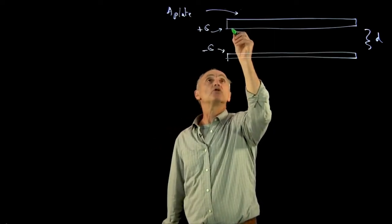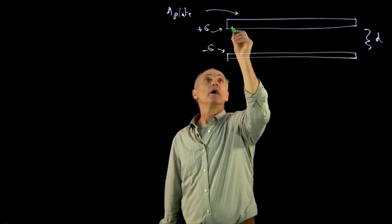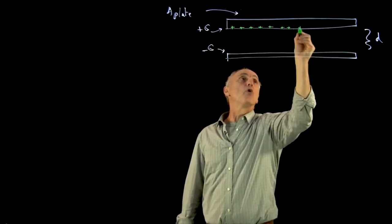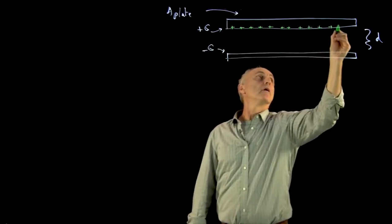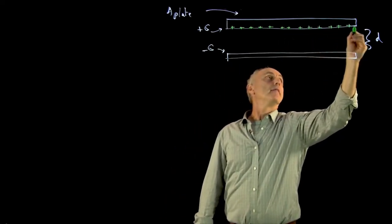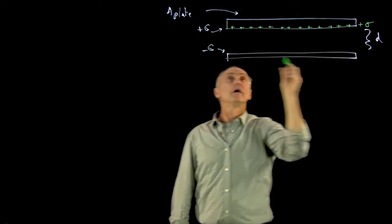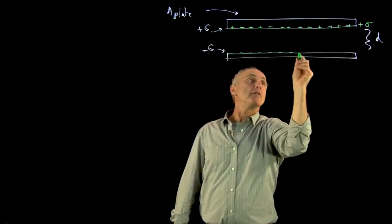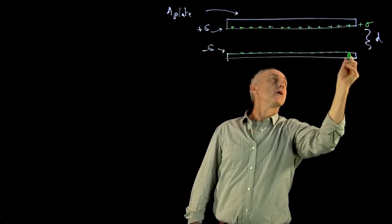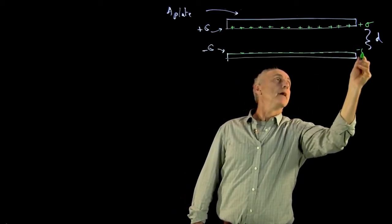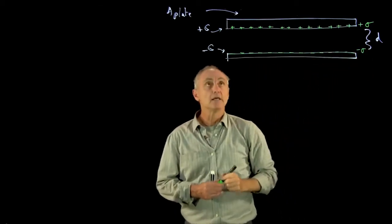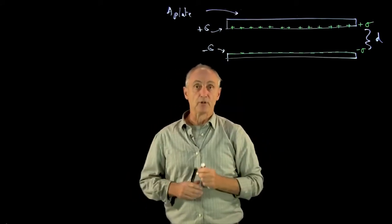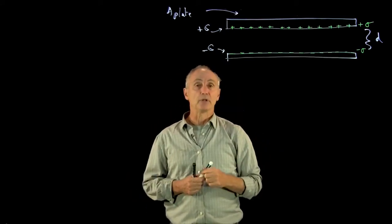What we know is that the charges on the positive plate will appear on the lower surface, and that will give a plus sigma. And the charges on the negative plate will appear on the surface between the plates — minus sigma. And this is the simplest example of a parallel plate capacitor.